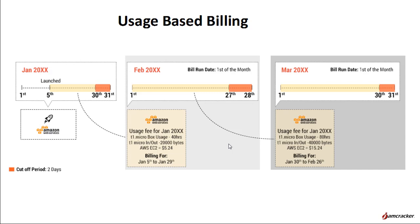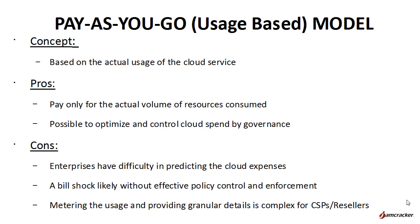In this example, the cut-off period has been configured to 2 days. Assuming the bill run date is the 1st of the month, the usage of the previous 2 days — that is, the usage of 30th and 31st January — is not included in this billing cycle. The platform bills for usage processed till the 29th, and the remaining 2 days are billed in the next cycle. This model has its share of pros and cons: enterprises benefit by paying only for actual resources consumed, but face a challenge in predicting cloud expenses.